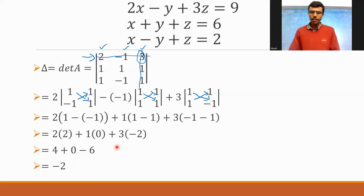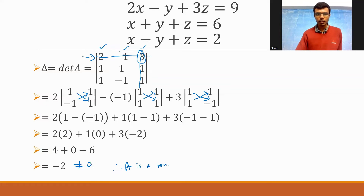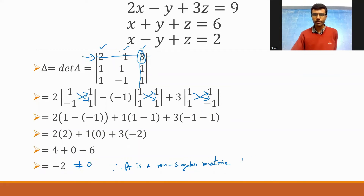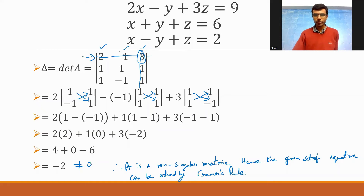Up till here I hope everything's clear. Delta is minus 2, which is not equal to 0. This means A is a non-singular matrix. Therefore, Cramer's Rule can be applied and the given set of equations can be solved by Cramer's Rule. If delta is 0, you cannot apply Cramer's Rule.